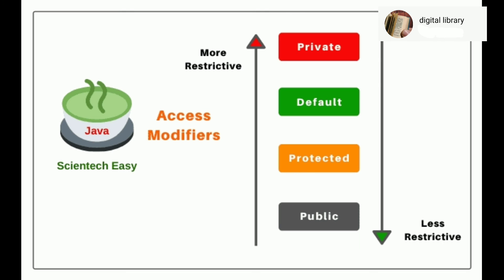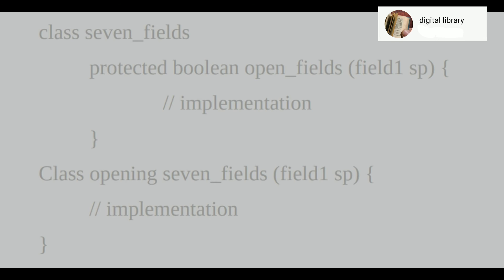Protected access modifier also imposes strict protocols and its application is limited — it cannot be applied to classes and interfaces. This is an example of the protected keyword: class SevenFields with a protected boolean openFields, field1sp. Now class OpeningSevenFields uses field1sp as its implementation.